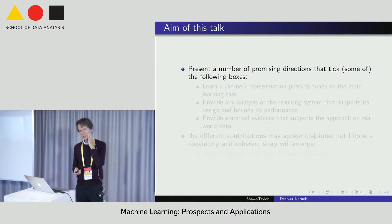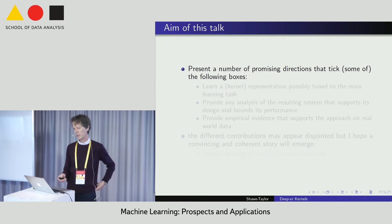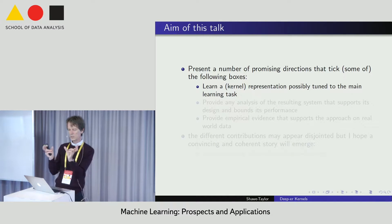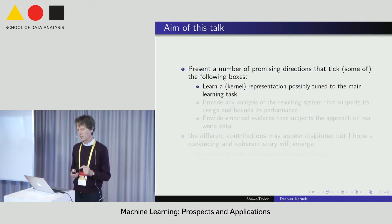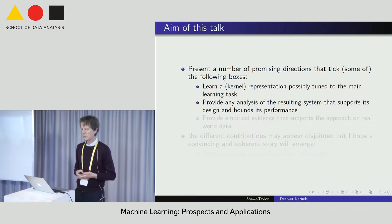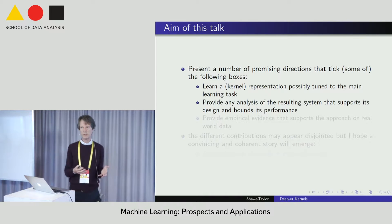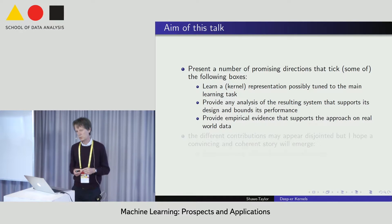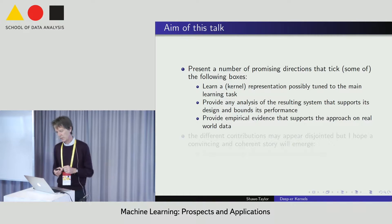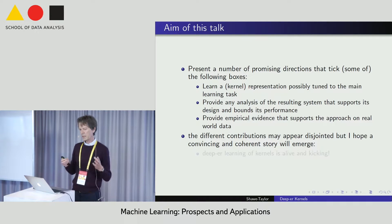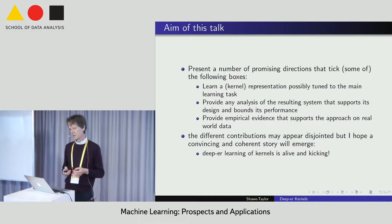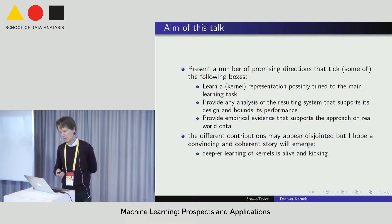What I want to do in this talk is present a number of promising directions: first, learning a representation possibly tuned to the main learning task, thereby partly learning this nonlinear mapping; second, any analysis of the resulting system that overcomes the weakness that standard generalization bounds only apply if the mapping is taken as fixed; and third, empirical evidence that supports these developments. I hope that despite appearing initially disjointed, you'll get a sense that deeper learning of kernels is alive and kicking.